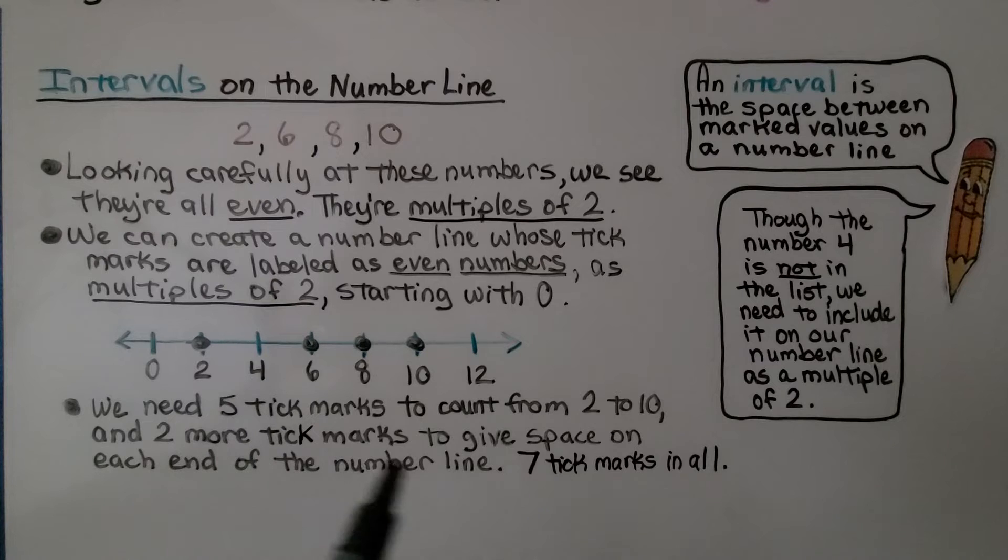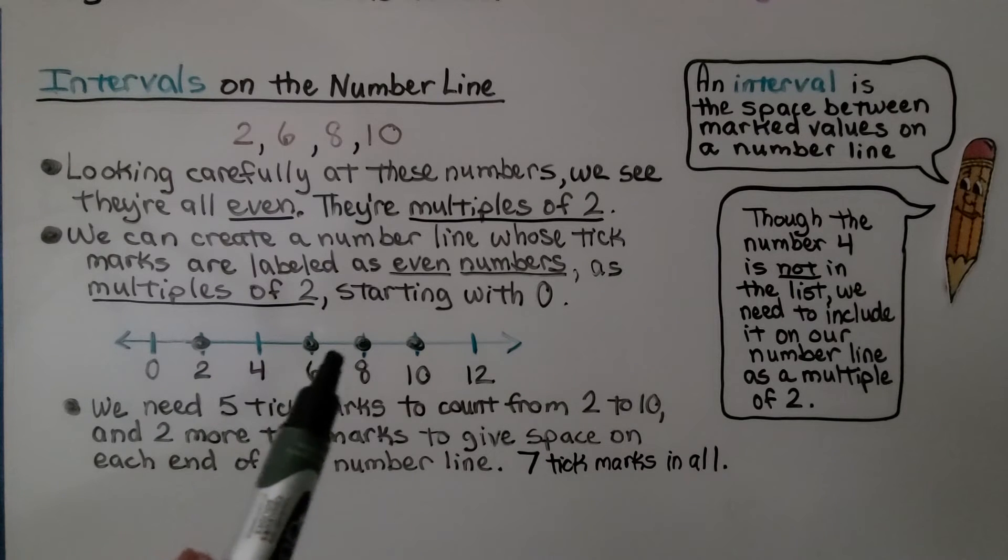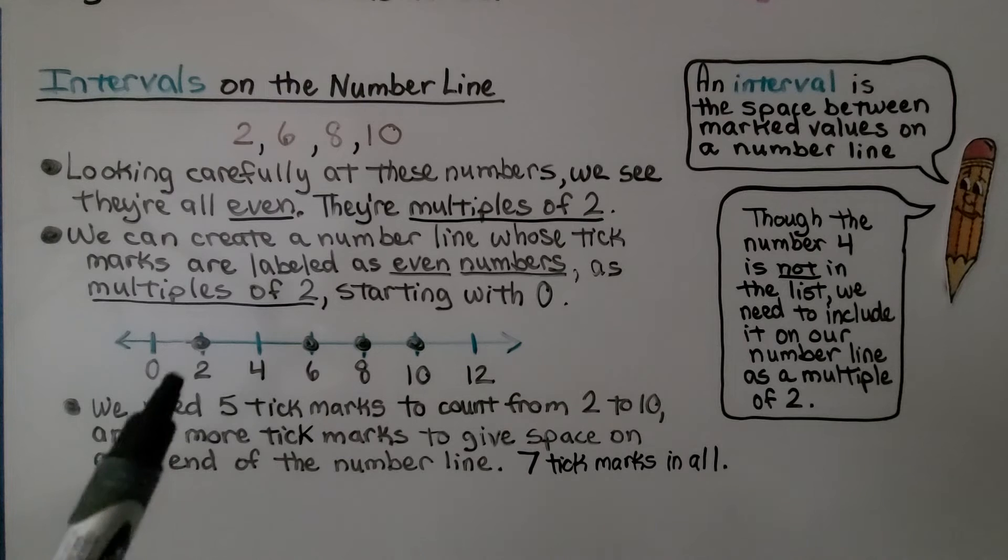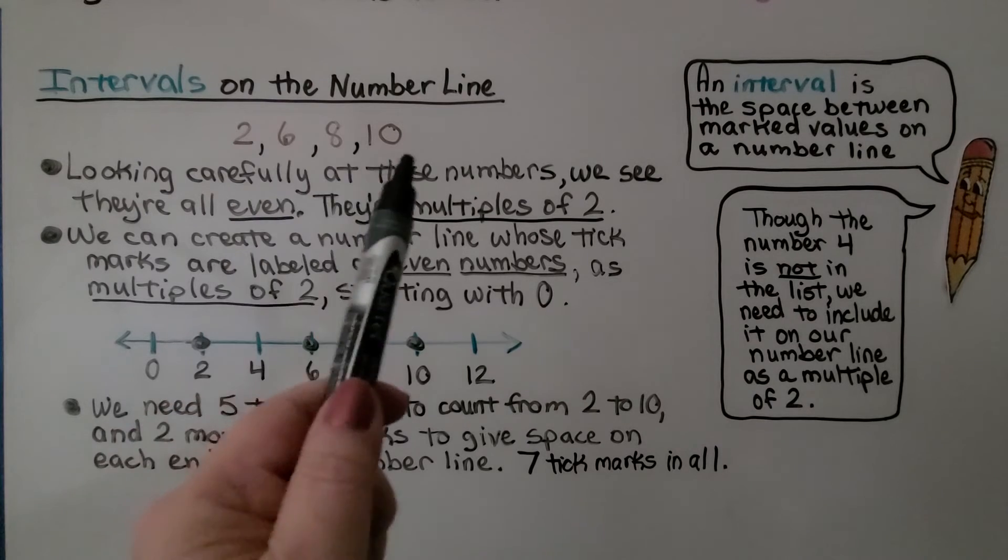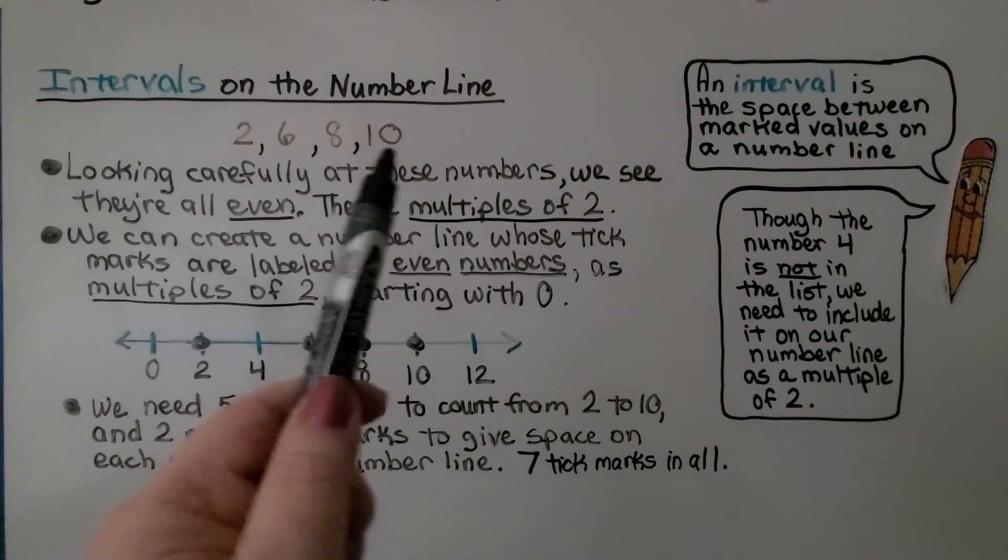We need 5 tick marks to count from 2 to 10. 1, 2, 3, 4, 5. And we need 2 more tick marks, 1 here and 1 here, to give space on each end of the number line. So that's going to be 7 tick marks in all when we've got 4 given numbers.